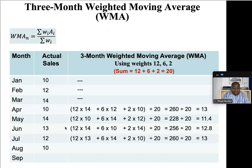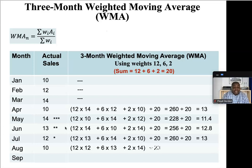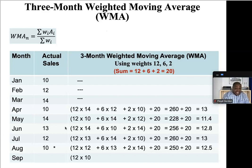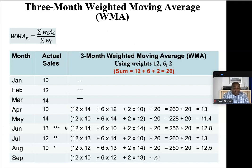Moving on to August: 12 times 12, plus 6 times 13, plus 2 times 14, divided by 20 — giving a forecast of 12.5 for August. And last but not least, September: highest weight 12 multiplied by 10 for August, plus 6 multiplied by 12 for July, plus 2 multiplied by 13 for June, divided by 20 — giving a forecast of 10.9 for September. That completes our three-month weighted moving average using weights 12, 6, and 2, where the sum of weights equals 20.